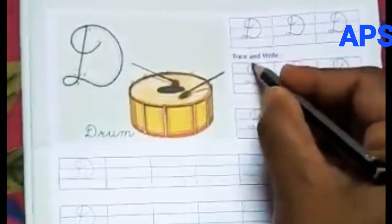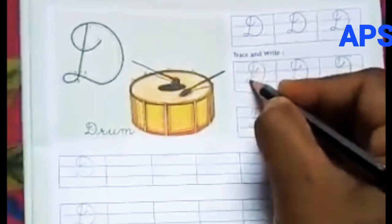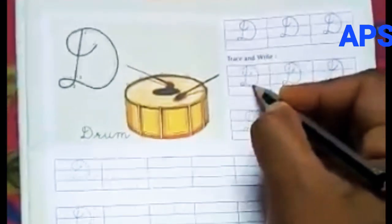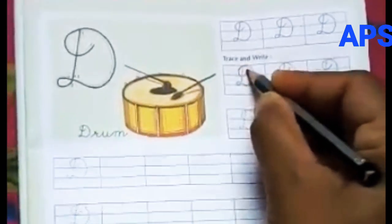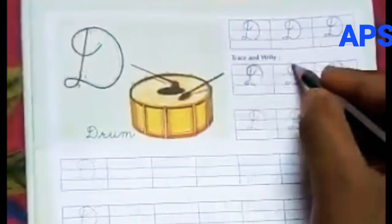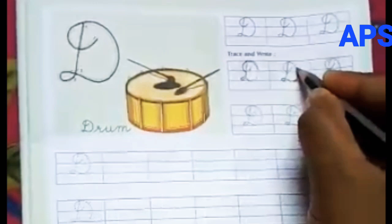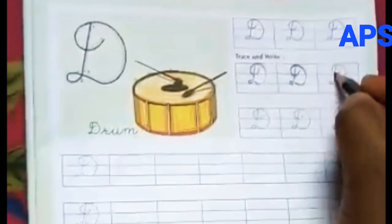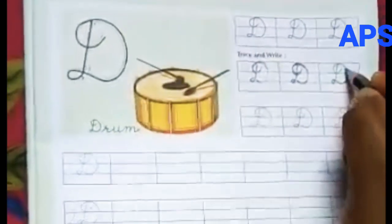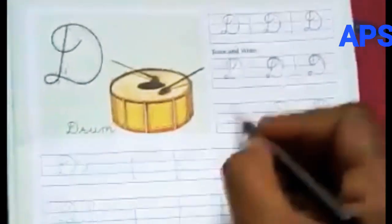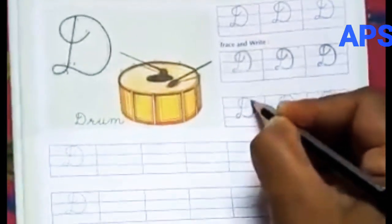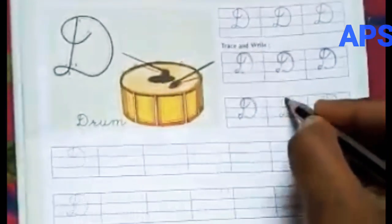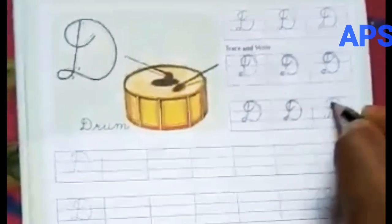Here also the same process, trace and write. Start from first line, comes down, turn, turn, turn, and goes up, turn to first, second line. Then again, same way, like this. Down, turn, and like this. Goes down, turn, and goes up, like this. So D for drum.